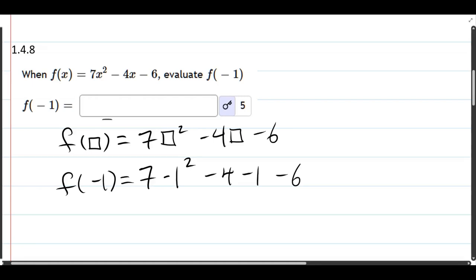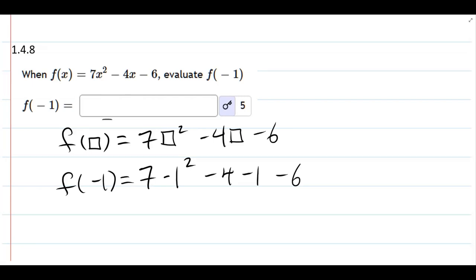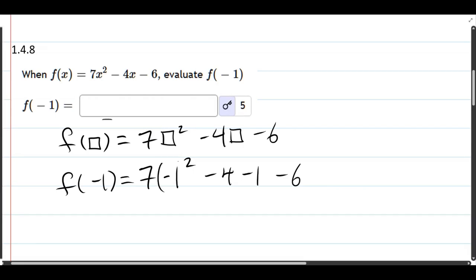Now this is a really horrible way to write it and mathematically incorrect. We need to make sure that we square the negative 1 and make sure this is negative 4 times negative 1. So we need to wrap it in parentheses. You could put a box around it, but that's silly notation.